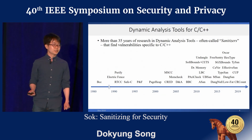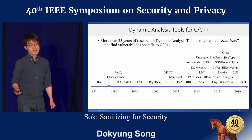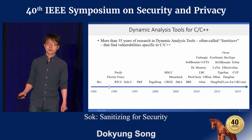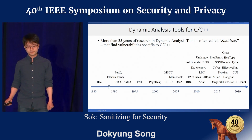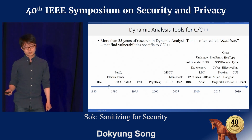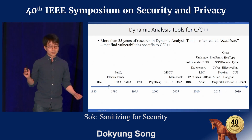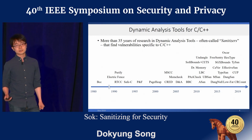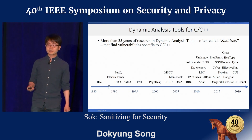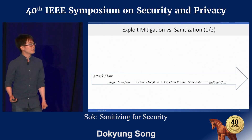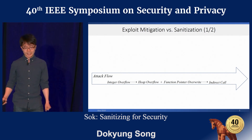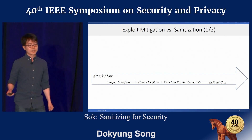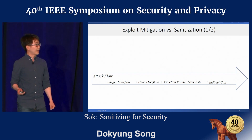Looking at these tools, you might wonder why some tools often discussed as exploit mitigations are shown here. In our paper, we consistently view these tools as sanitizers and bug-finding tools, because they do have characteristics desirable in detecting and finding vulnerabilities. Let me use an example flow of a control flow hijacking attack to explain how exploit mitigations and sanitizations might differ and perhaps overlap.